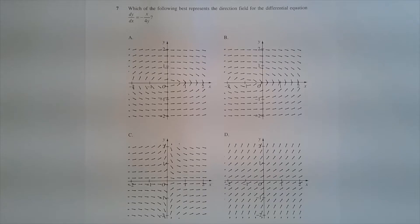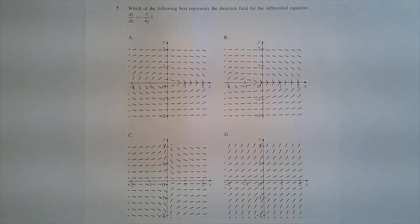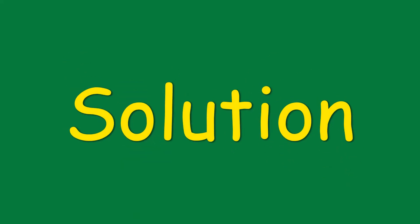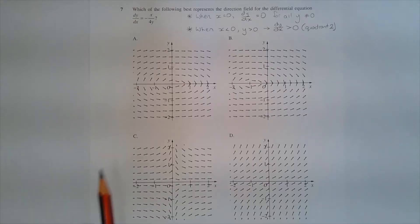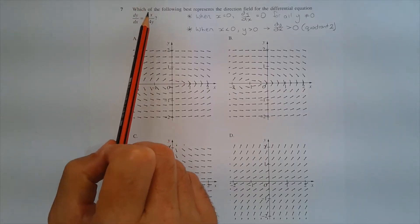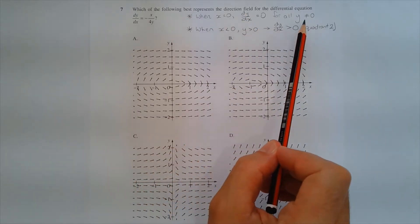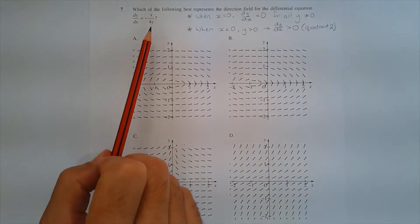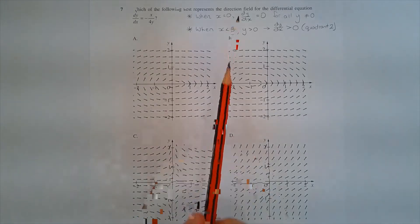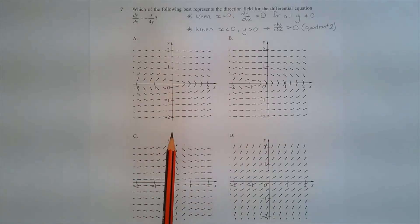Question 7: Which of the following best represents the direction field for the differential equation dy/dx equals negative x over 4y? Since x is the numerator, when x equals 0, dy/dx equals 0 for all y not equal to 0, because y is the denominator and we cannot have division by 0. So along the y-axis, the gradient of the arrows should be 0, or horizontal in direction.